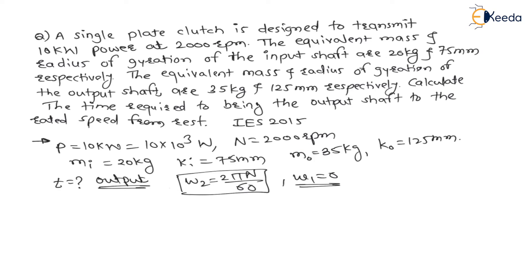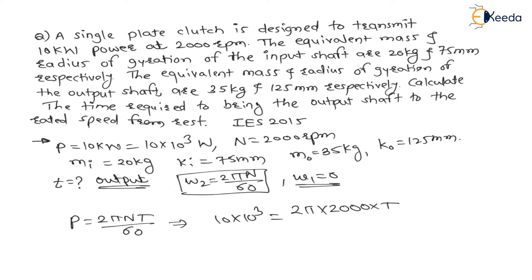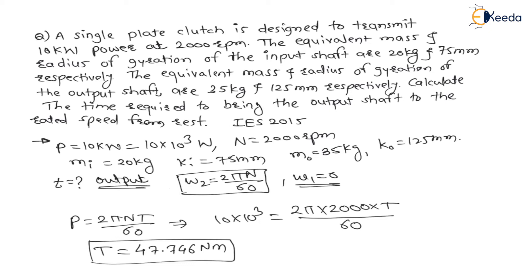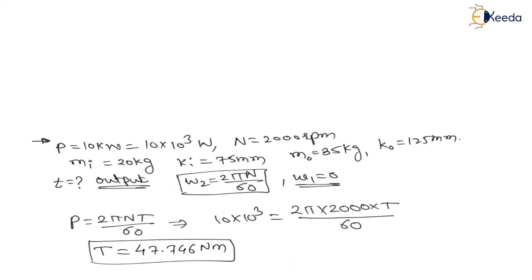Now, Power = 2πNT/60. Putting in the values: 10 × 10³ = 2π × 2000 × T / 60. Solving for torque T, we get T = 47.746 N·m. This is the torque transmitted, calculated from the power formula with power in Watts giving torque in Newton-metres.